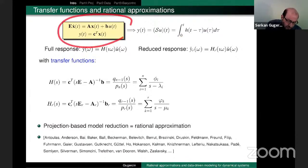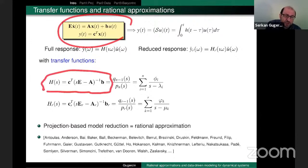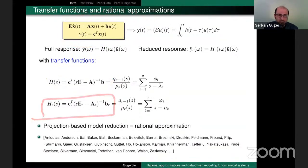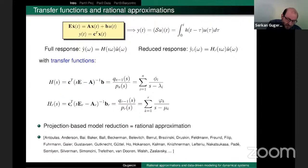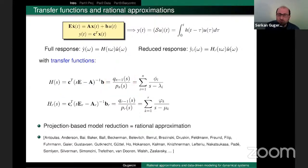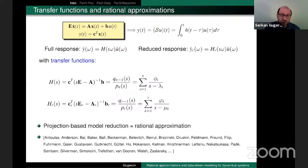We can explicitly write down these transfer functions by taking the Laplace transform of the equations. For the full model, here is the transfer function H(s) = C^T(sE - A)^{-1}B. Similarly, for the reduced model, here is H_r(s). These are nothing but rational functions: H(s) is a degree-N rational function in s, and H_r(s) is a degree-R rational function in s.